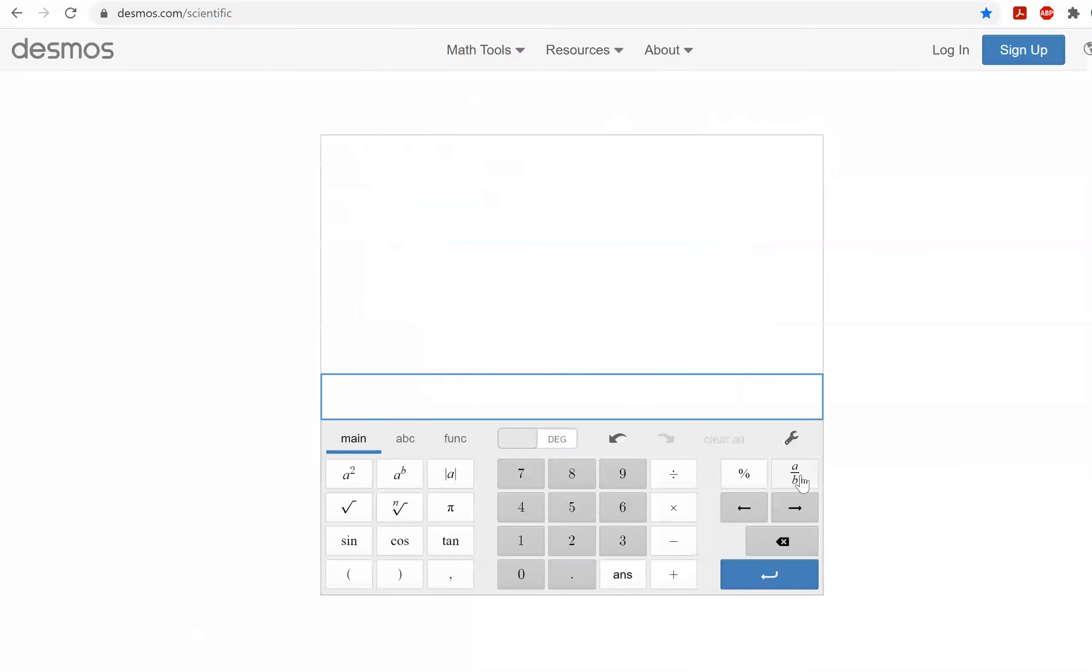So I'll go ahead and set up a fraction. In the numerator, we'll have natural log of 620 over 760. And then in the denominator, negative 0.145. So we're getting, we'll go ahead and round that to one decimal place, 1.4.